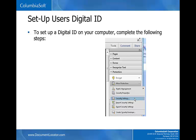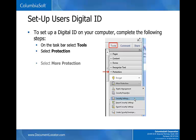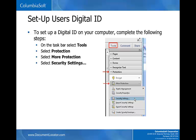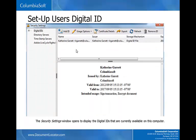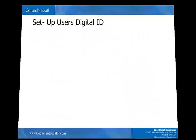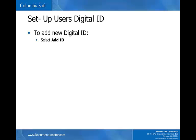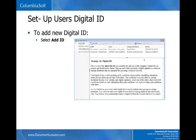To set up a digital ID on your computer, complete the following steps. On the taskbar, select Tools. Select Protection. Select More Protection. Select Security Settings. The Security Settings window opens to display the digital IDs that are currently available on this computer. To add a new digital ID, select Add ID.